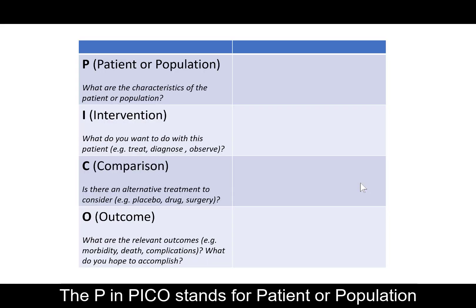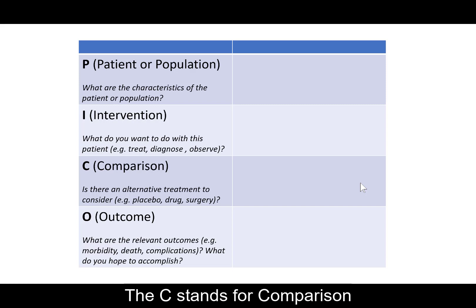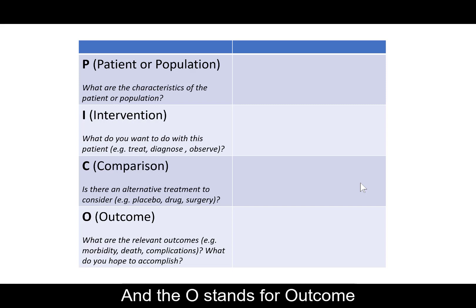The P in PICO stands for patient or population, the I stands for intervention, the C stands for comparison, and the O stands for outcome.